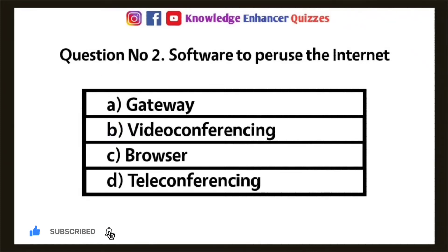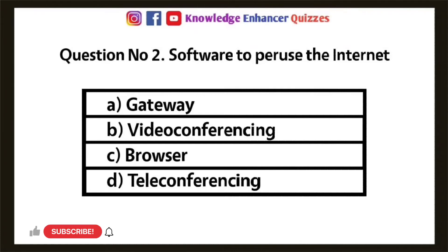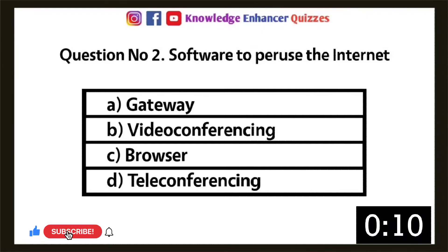Question 2: Software to peruse the internet — Option A: Gateway, Option B: Videoconferencing, Option C: Browser, Option D: Teleconferencing. Option C is the right answer.